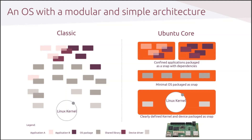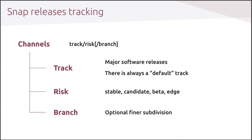This delivers strong resiliency and better security. Transactional upgrades are one of the most important features of snaps. A channel identifies a specific release. Every channel name has a track, a risk level and an optional branch. The track indicates the major software release being tracked. The risk identifies the maturity or stability of the release. The optional branch is typically used for development purposes, for trying a specific feature. There is always a default track if none is specified.